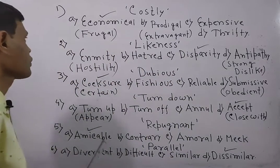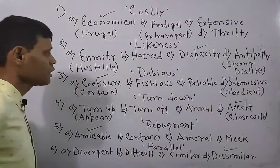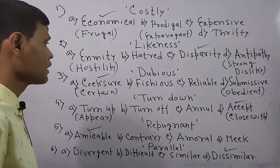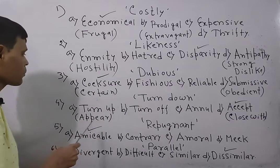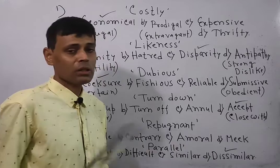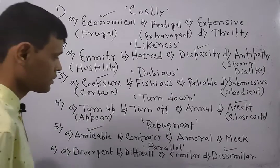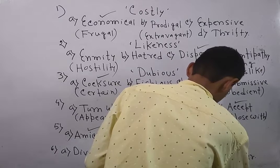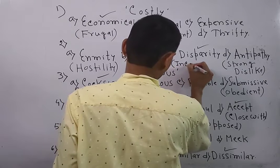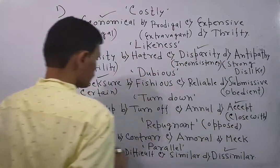Now look over the overall question. The first question goes for costly, answer economical. Second goes for likeness, answer disparity, means great inconsistency. Cocksure means certain. Turn down is the word, its opposite should be accept. Instead of accept, close with might have been the option. Repugnant means opposed, amicable. And parallel, the opposite is dissimilar. It means inconsistency.